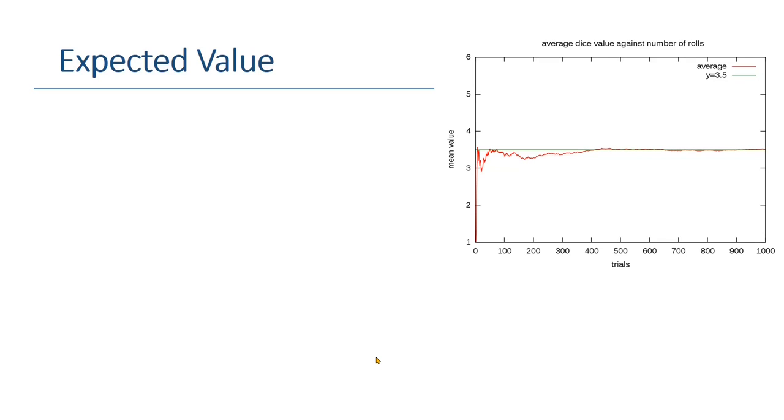Before starting calculation for average case time complexity, we must understand what is expected value. Expected value is a constant value that is achieved after several evaluations. For example, if you roll a dice for multiple times and calculate its average, you will get 3.5 as its expected value. For smaller number of trials, you may not get this value, but as you increase the number of trials, you get a constant value that is known as expected value. And this expected value is average case time complexity.